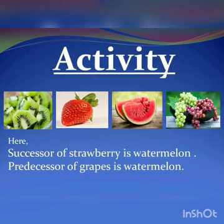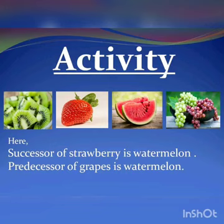Let us understand the concept through an activity. Here we can see 4 different types of fruits: kiwi, strawberry, watermelon, and grapes. If I ask what is the successor of strawberry, the answer is watermelon. Yes, the successor of strawberry is watermelon.